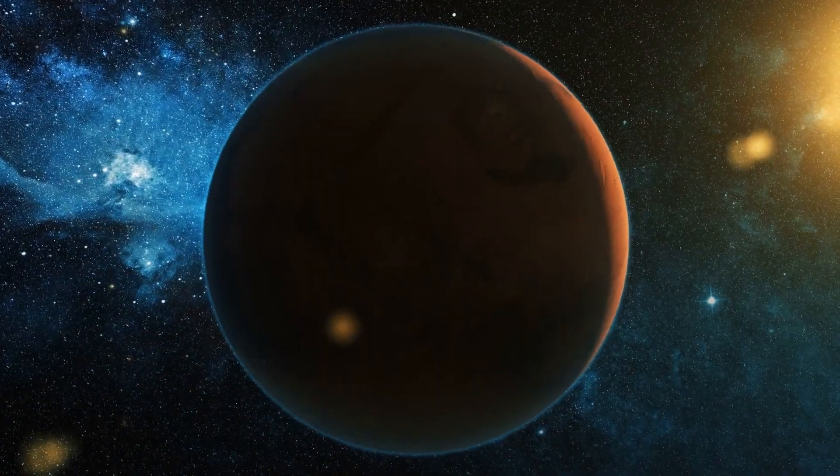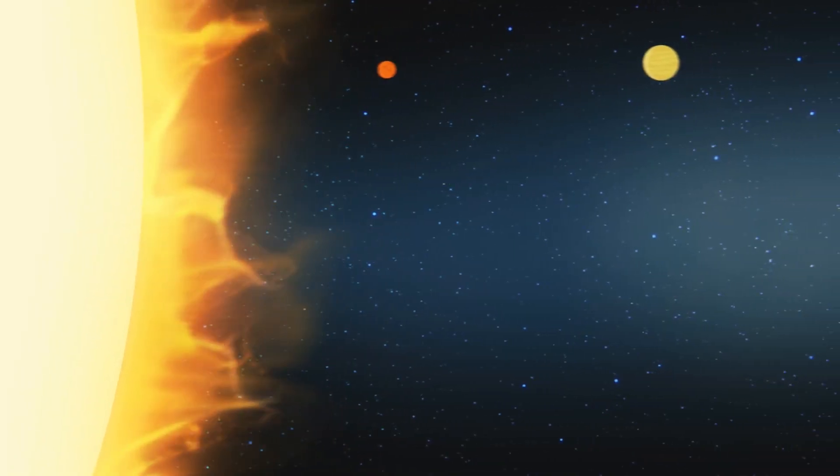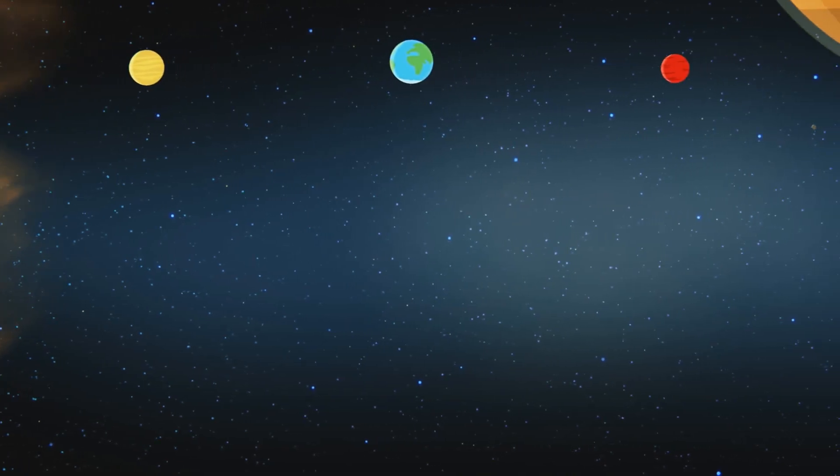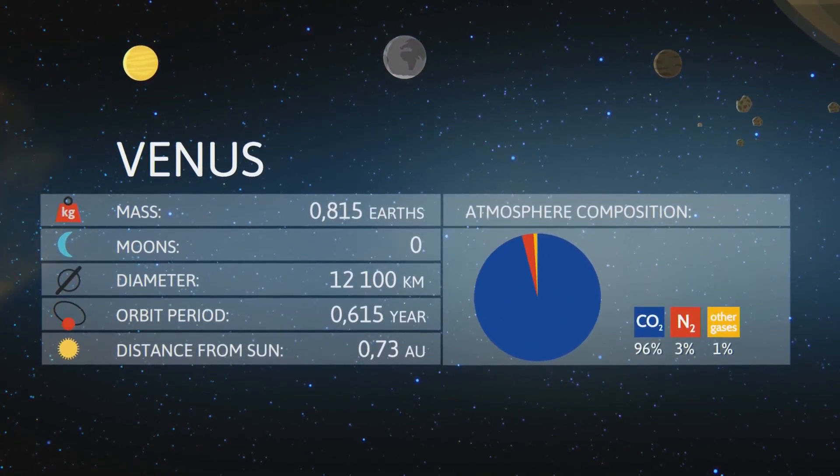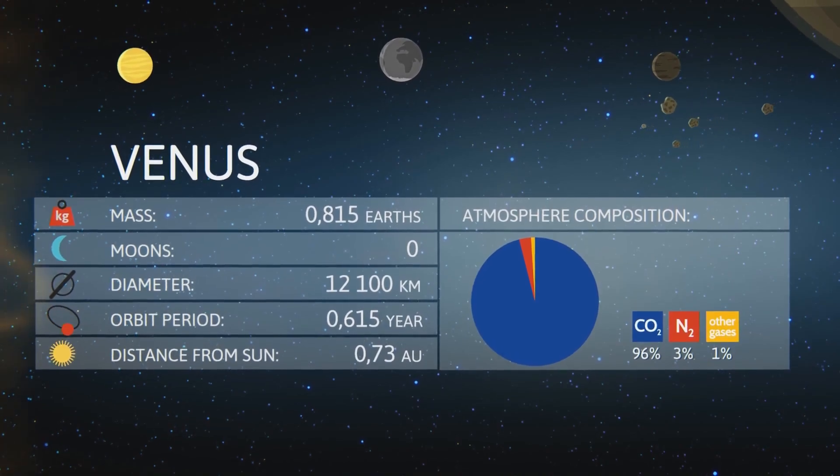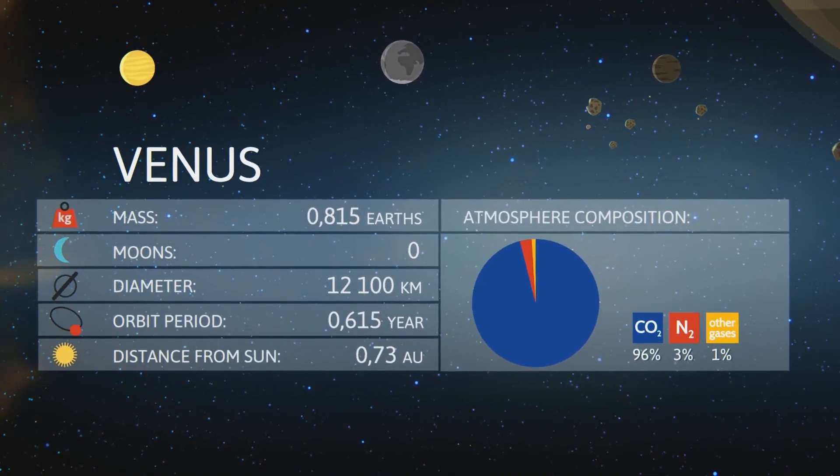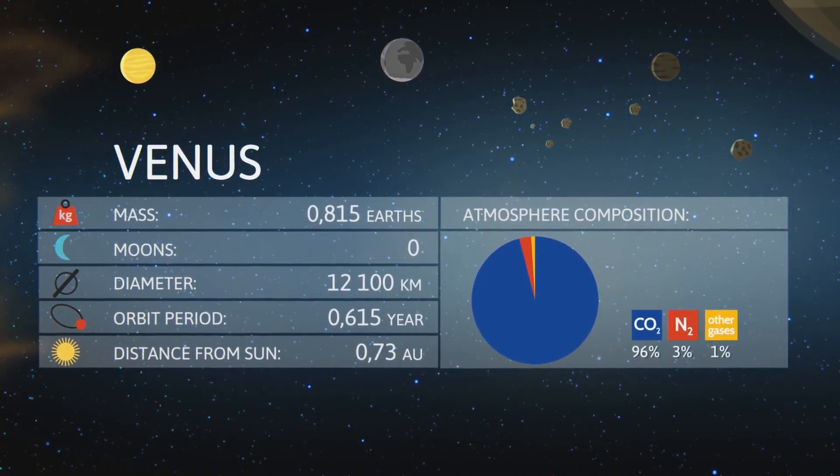Welcome back, space connoisseurs. Today, we're taking a trip to the planet that might just be hell's vacation home. That's right, Venus, the second rock from the sun and possibly the most terrifying place in the entire solar system.